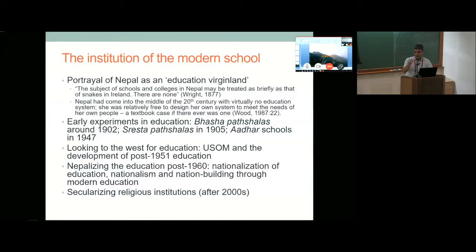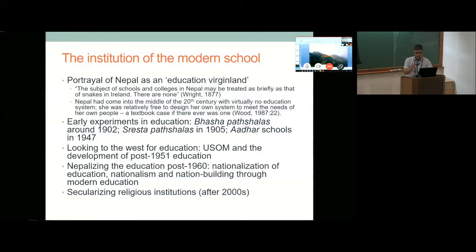In 1905, based on the Macaulay version, we had our own versions of Sreshta Path Salas — clerical schools. Towards the end of the Rana rule in 1947, the Ranas experimented with basic schools. These are some of the developments before 1951.